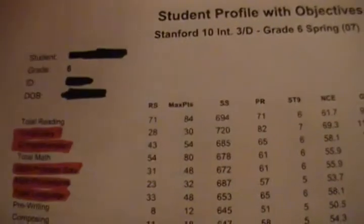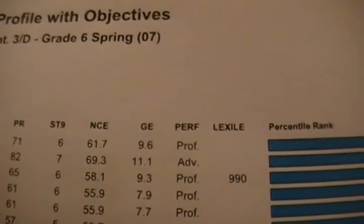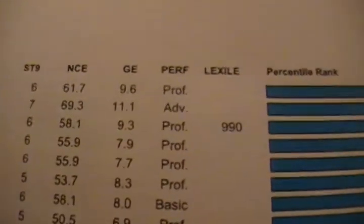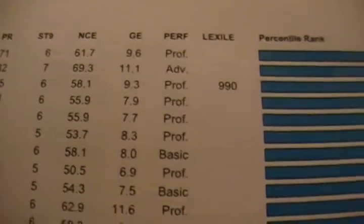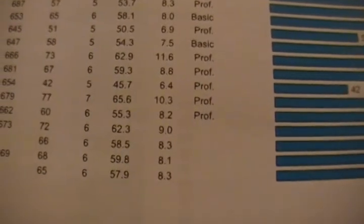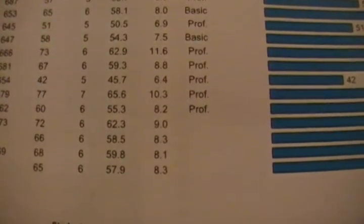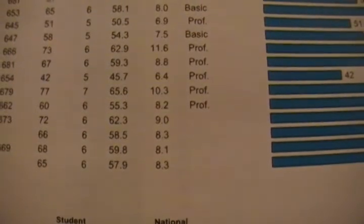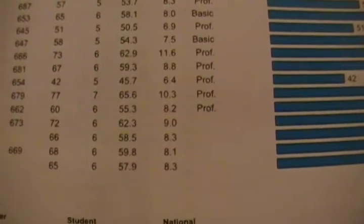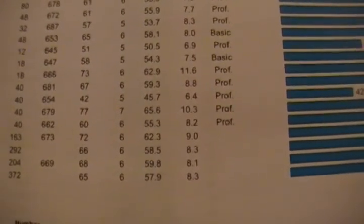So you get the raw score, the max points, and the C9. Then what I like to look at is the grade equivalent — you got a 9.6, 11.1, 9.3 — then go all the way down and look at the complete battery. The last one gives you an 8.3, so it kind of took all your scores and put you in a blender, shook you up, and this is what you came out as.